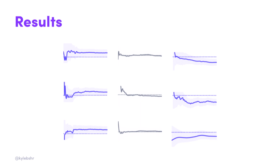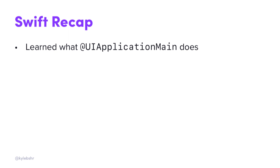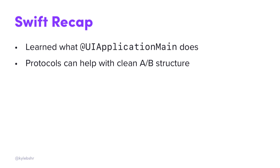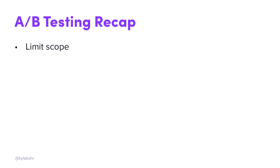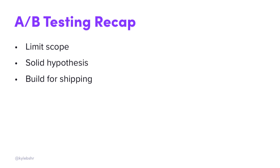So to go over a Swift recap — pun intended — of what we learned: we learned what @UIApplicationMain does on your AppDelegate and how to A-B test an entire app, though I don't recommend it. We saw how protocols can help have a clean A-B structure and make it easy to clean up later. And in cases where that doesn't work, lazy can help so you're not instantiating things unnecessarily. As far as A-B testing: try to limit your scope so you're not affecting too many areas of the app and moving too many metrics. Have a solid hypothesis so that your results have meaning. And build for shipping — something we always strive for — meaning quick experimentation cleanup. As you add A-B tests to your app, you add enormous complexity with all these different code paths. Protocols and lazy vars helped us make it easy to delete old tests and ship them.